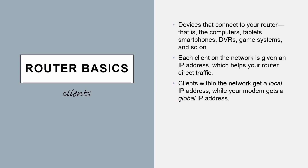Router basics clients are devices that connect to your router — computers, tablets, smartphones, game systems, and so on. Each client on the network is given an IP address which helps your router direct traffic. For example, in your house, if you are using three cellphones and one computer, those three cellphones each have different IP addresses, as does your computer. Clients within the network get a local IP address while your modem gets a global IP address.